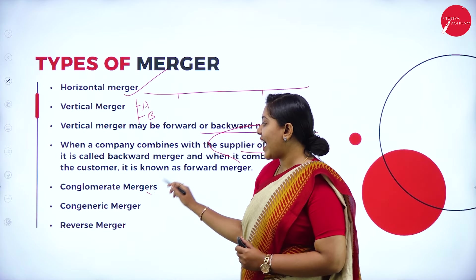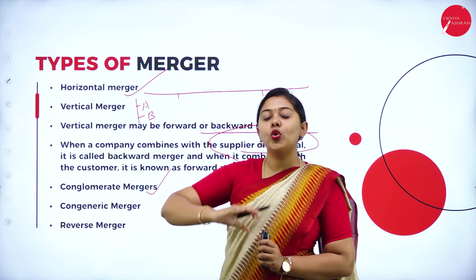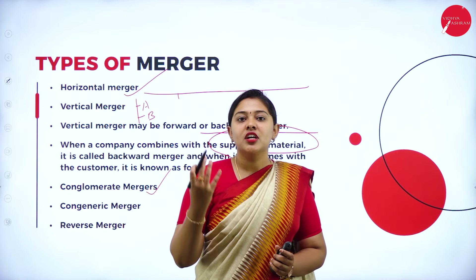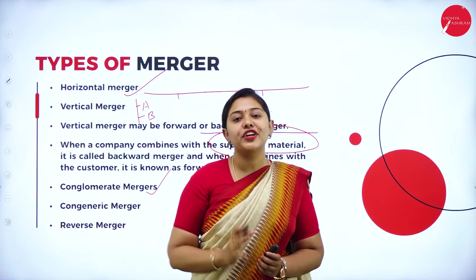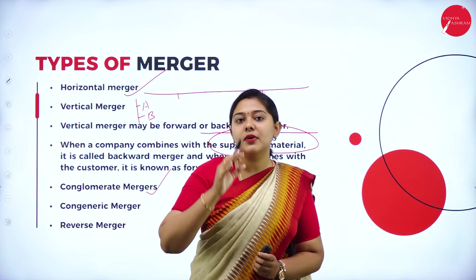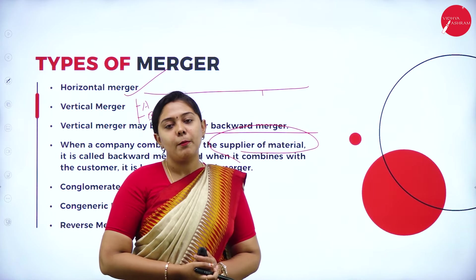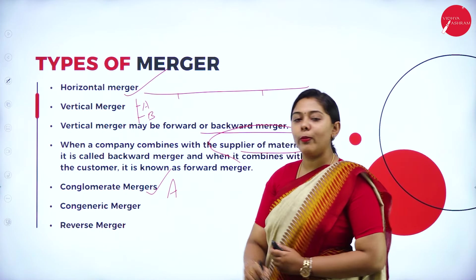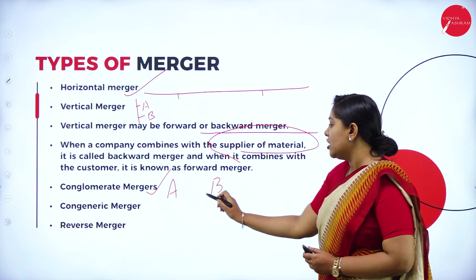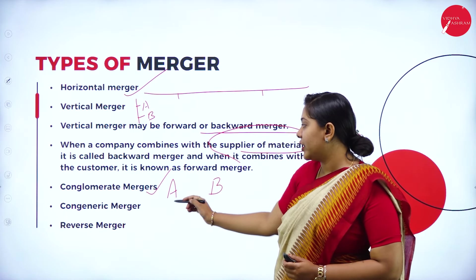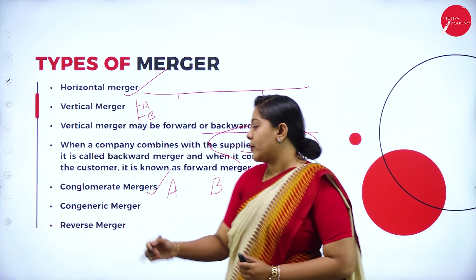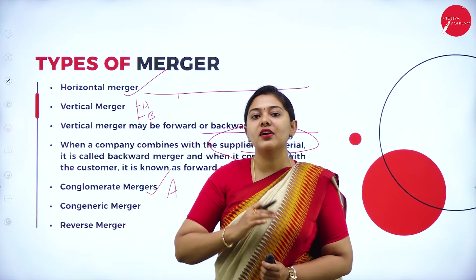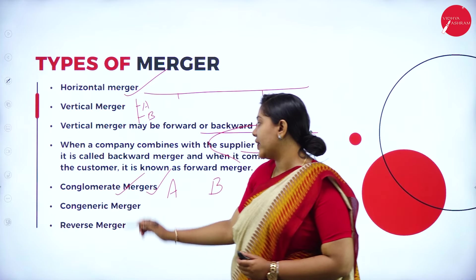Moving forward, we have conglomerate merger. Conglomerate means two different activities from two different business industries — different business lines. Such a merger is called a conglomerate merger. For example, Company A is an automobile company and Company B is a jewellery company — two completely different business activities. If they merge, it is called a conglomerate merger.